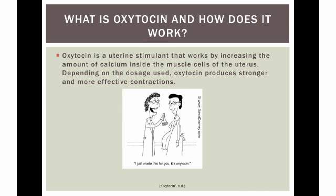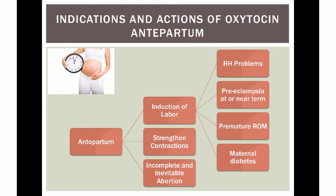Oxytocin is a uterine stimulant that works by increasing the amount of calcium inside the muscle cells of the uterus. The more calcium in the muscle cells, the stronger the contraction.